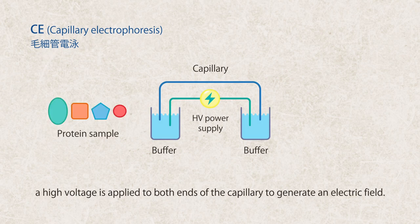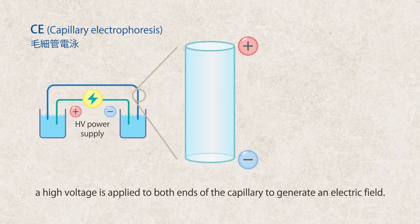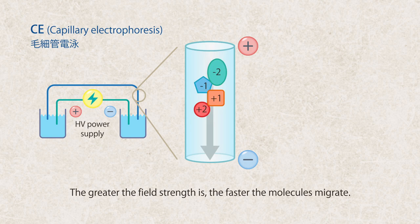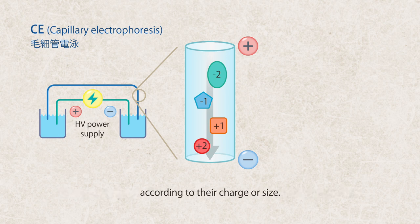In capillary electrophoresis, a high voltage is applied to both ends of the capillary to generate an electric field. The greater the field strength, the faster the molecules migrate. Proteins can be quickly separated in the gel matrix inside the capillary according to their charge or size.